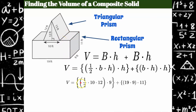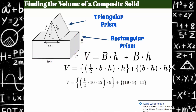So I have half the base of the triangle times the height of the triangle times the height of the prism. Then I go to the rectangular prism and I have the base and height of the rectangular face: 19 times 9, and the height of the prism is 9.